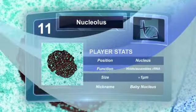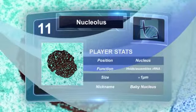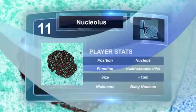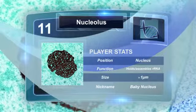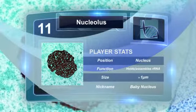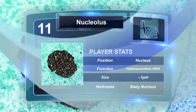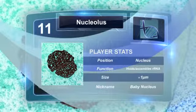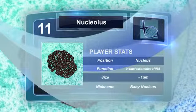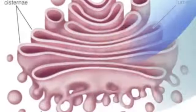The nucleolus is a non-membrane-bound structure composed of proteins and nucleic acids found within the nucleus. Ribosomal RNA is transcribed and assembled within the nucleolus.